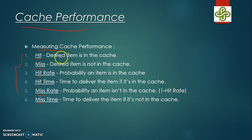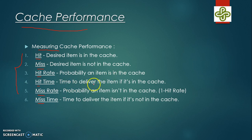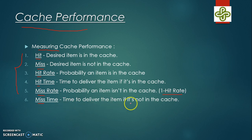A cache hit is when the desired item is present in the cache. A miss is when it is not present. Hit rate is the probability that your item is present in the cache. Hit time is the time required to deliver that item. Miss rate is the probability that the item is not present — it is 1 minus the hit rate. Miss time is the time to deliver the item if it's not present in the cache.